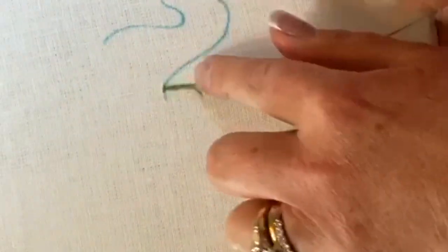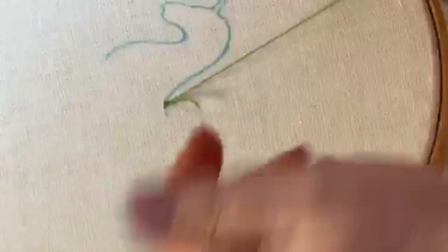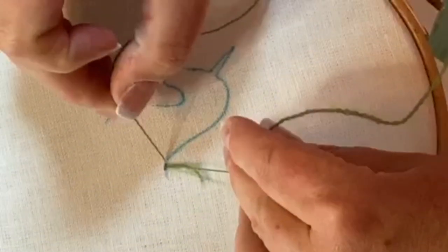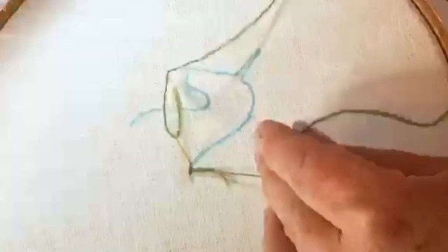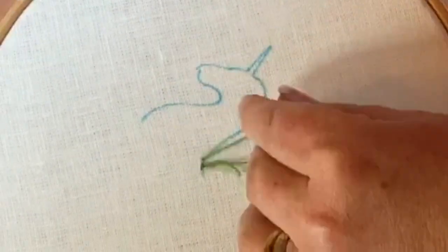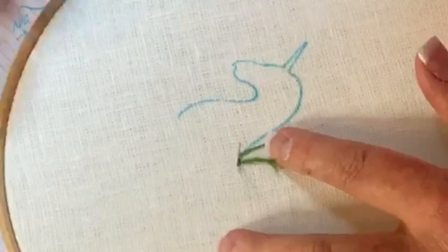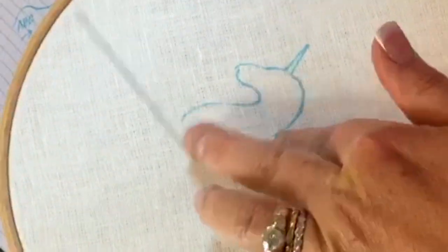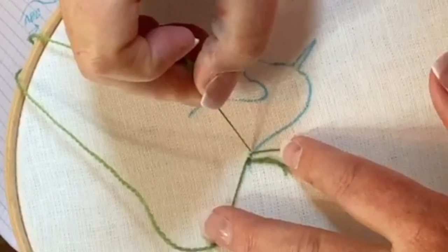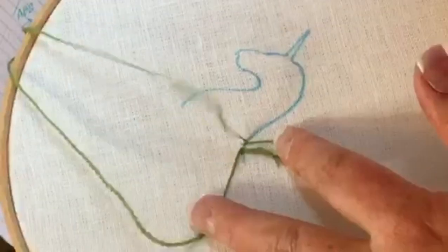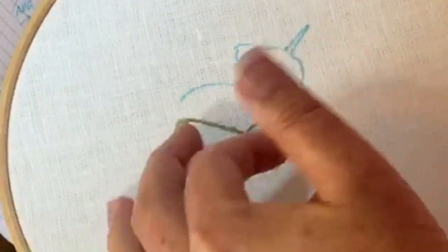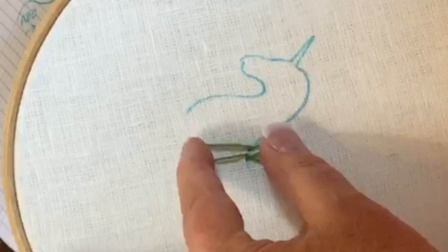Now that is a turkey work knot but we're going to keep going which means that we're going to go down again in B so you go down in B up in A just scoot back just a little bit down in C and now you really have a loop at the top and a loop at the bottom.